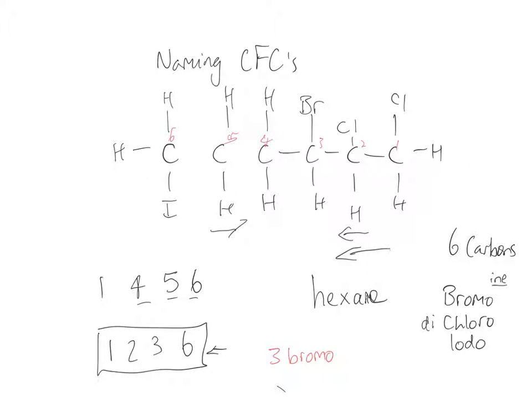So we go to the next alphabetical halogen group. And we've got chlorine on 1 and we've got a chlorine on 2. So it'll be 1,2-dichloro.